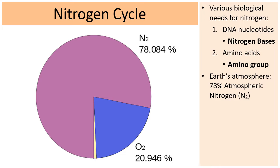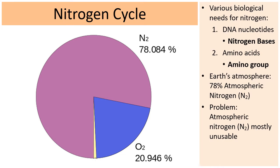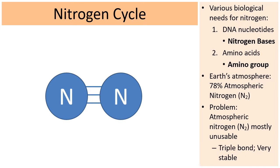The earth's atmosphere is about 78% nitrogen, which sounds like we could just breathe it in to meet our nitrogen needs. Unfortunately, it's not that simple — the nitrogen in the atmosphere is mostly unusable to life. The formula for atmospheric nitrogen is N₂: two nitrogen atoms bonded by a triple bond. This triple bond is very strong and stable, so when we inhale air, our cells are not typically able to use this nitrogen — it has to be converted into another form first.